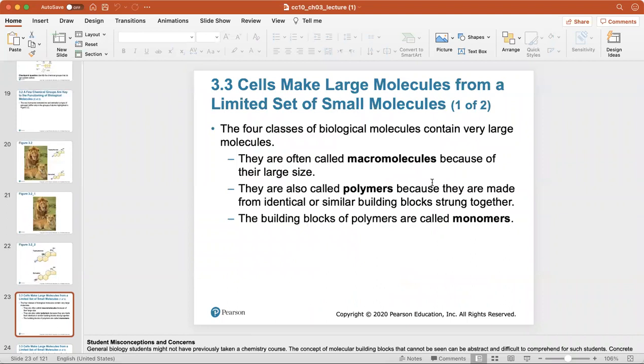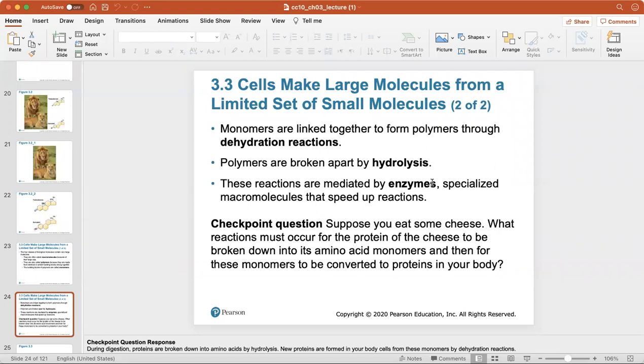The four classes of biological molecules contain very large molecules, often called macromolecules because of their large size. They're also called polymers because they're made from identical or similar building blocks strung together. The building blocks of polymers are singularly called a monomer. Monomers are linked together to form a polymer through a dehydration reaction, and polymers are broken down by hydrolysis. These reactions are mediated or helped along by enzymes which speed up reactions.